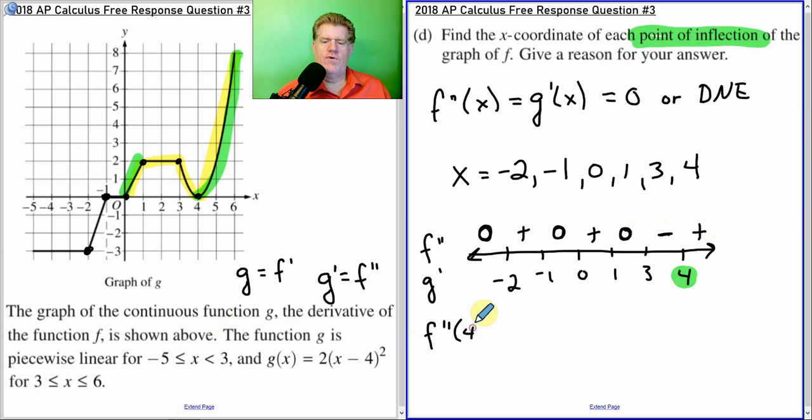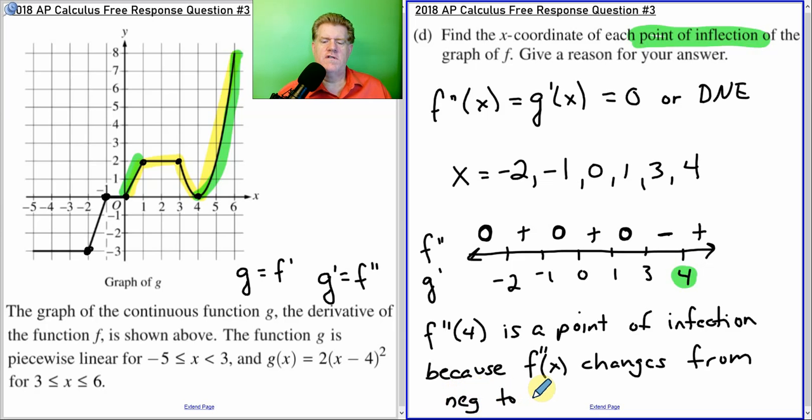So, f prime of 4 is a point of inflection. And now the justification, the reason, because the table's not enough. Because f double prime of x changes from negative to positive at 4. And there's your justification. All right, ladies and gentlemen, that's how you do this question. So, continue good luck in your practice and I will talk to you later.